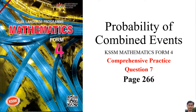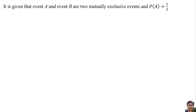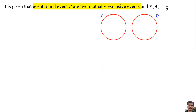Probability of Combined Events, KSSM Mathematics Form 4 Comprehensive Practice, Question 7, Page 266. It is given that event A and event B are two mutually exclusive events, and the probability of event A is 1 over 3. This can be illustrated as a Venn diagram, and we write 1 over 3 inside the circle of event A.